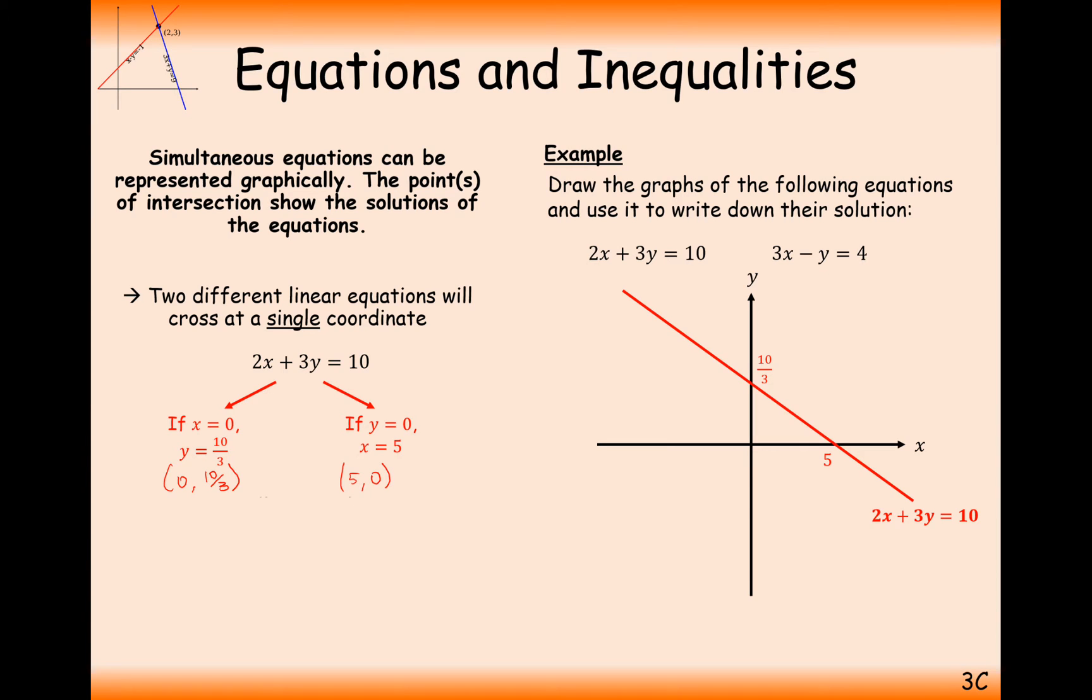We can do the same for the second equation as well. Set one of your letters equal to 0. Find out what the other letter needs to be to make the equation equal. So, y in this case needs to be minus 4 when x is 0. And when y is equal to 0, x needs to be 4 thirds to make the equation equivalent. Plot these two coordinates. Drawing those two coordinates together with a straight line because we don't have any x-squared terms in our equation. And the solution to these simultaneous equations will be the point at which these two graphs intersect.